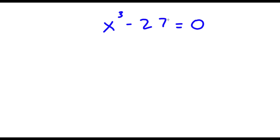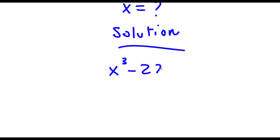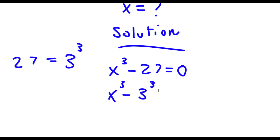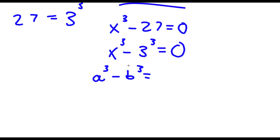Alright, so I have x to the power of 3 minus 27 is equal to 0, and I'm trying to find the value of x. I start with x cubed minus 27 equals 0. Now 27 is the same thing as 3 to the power of 3. So substituting in, I get x to the power of 3 minus 3 to the power of 3 is equal to 0. Now if I have something in the form a cubed minus b cubed, this is equal to a minus b times a squared plus ab plus b squared.